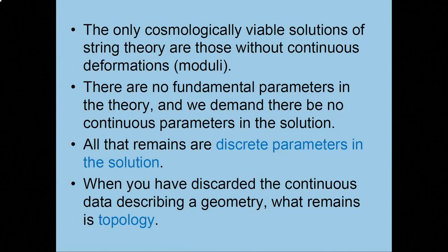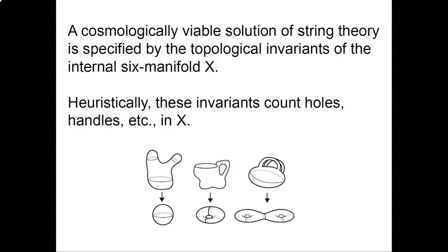Now, I claimed that there are no fundamental parameters in the theory. And we're hereby demanding that there are no continuous parameters in the solution. All that leaves are discrete parameters in the solution. And when you've discarded the continuous data describing a geometry, you've modded out by continuously variable things, what's left is topology. So, all you have left is the topology of the six manifold.